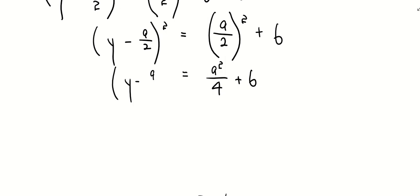But in order for us to get rid of the square, I must square root on both sides. But when I square root, what must I introduce?